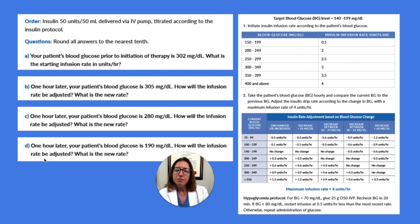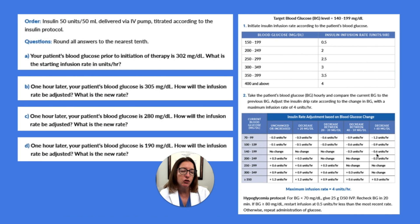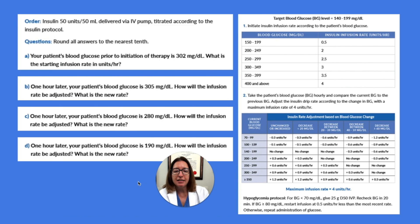Finally, Part D: one hour later, our patient's blood glucose is 190. How will the infusion rate be adjusted and what is the new rate? Our blood glucose came down 90. Looking up 190 on the protocol, it falls within its range. We had a big drop, so we use the last column, which applies when there is a decrease of 60 or more mg/dL — and we definitely had that with a decrease of 90 mg/dL. We reduce our infusion rate by 0.6 units per hour. Our new infusion rate, previously 4 units per hour, is now 3.4 units per hour. That is the answer to Part D.